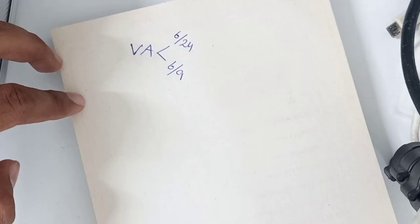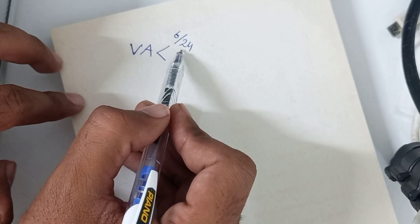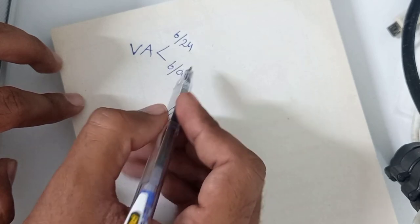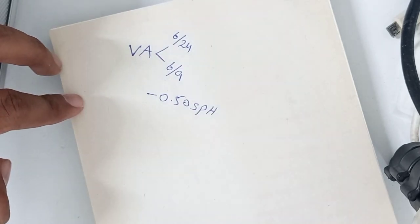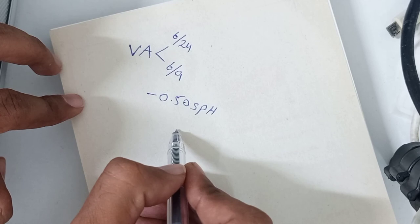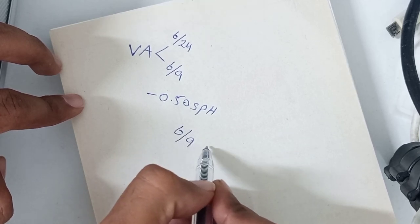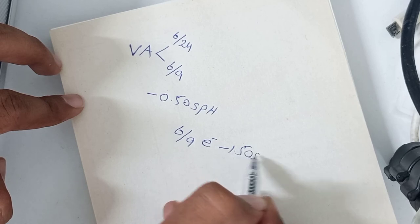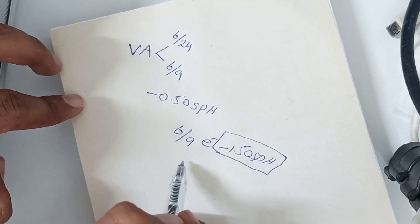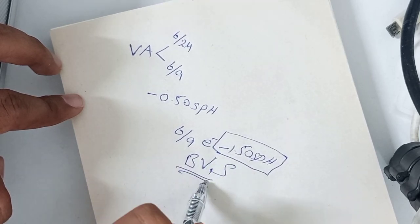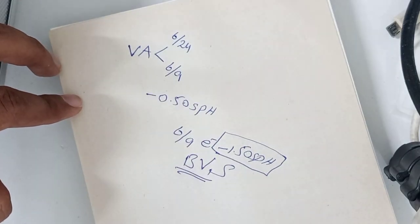Another example: if the unaided visual acuity in the right eye is 6/24 and the patient preferred minus lenses, then after increasing the minus power, if the visual acuity is 6/9 with minus 1.50 spherical, that minus 1.50 DS is the best vision sphere. The remaining visual acuity may be improved with astigmatic correction using cylindrical lenses.